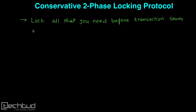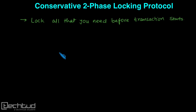The conservative protocol is conservative or selfish in nature, which requires all data items or all variables to be locked before the transaction even starts. This means you have to do an early prediction of how many data items you are going to use.